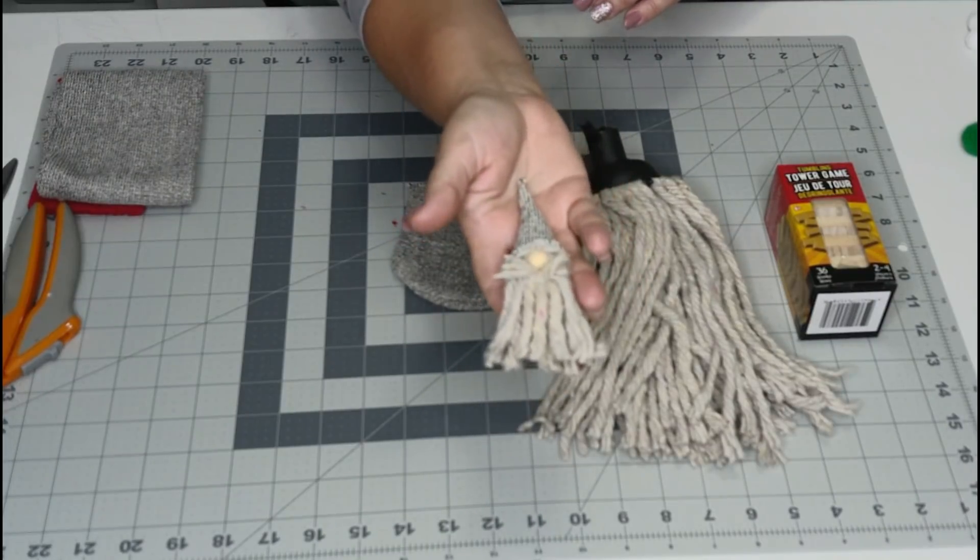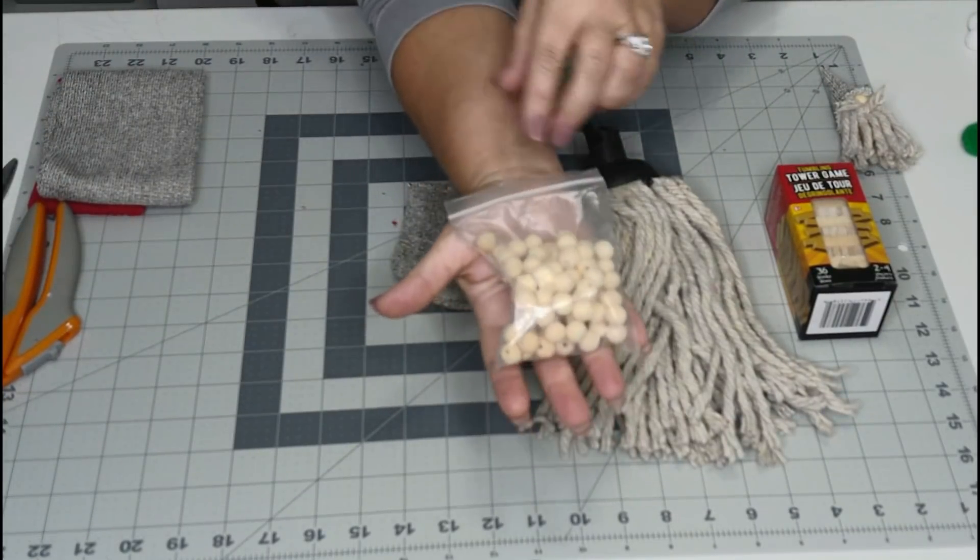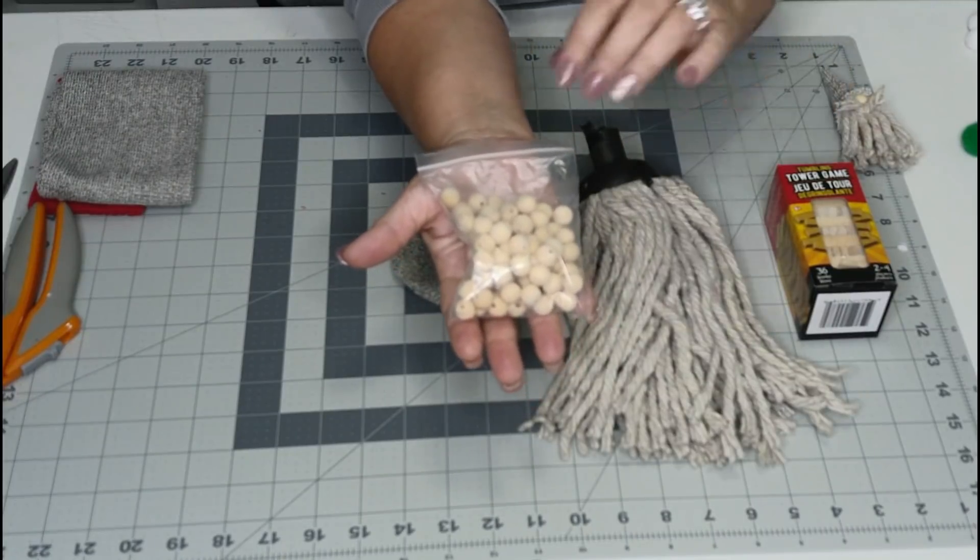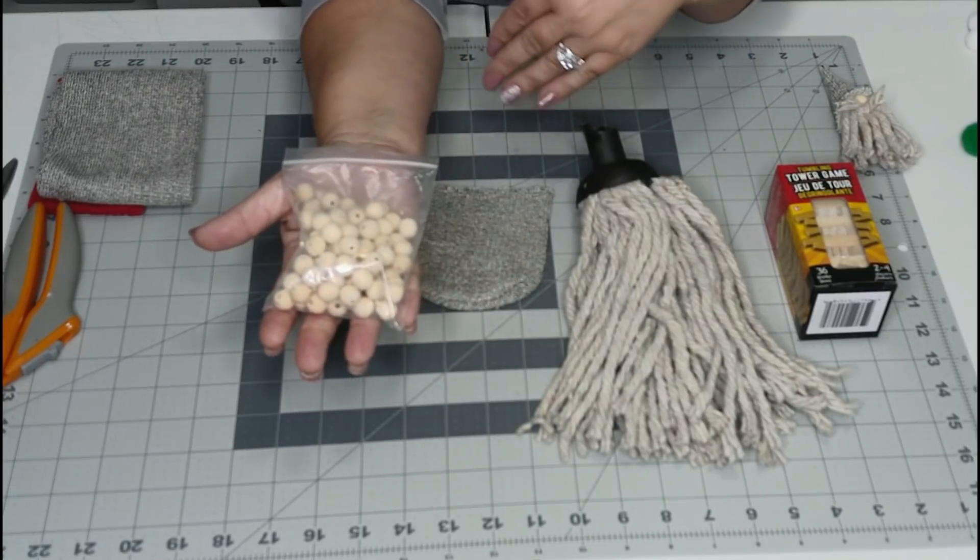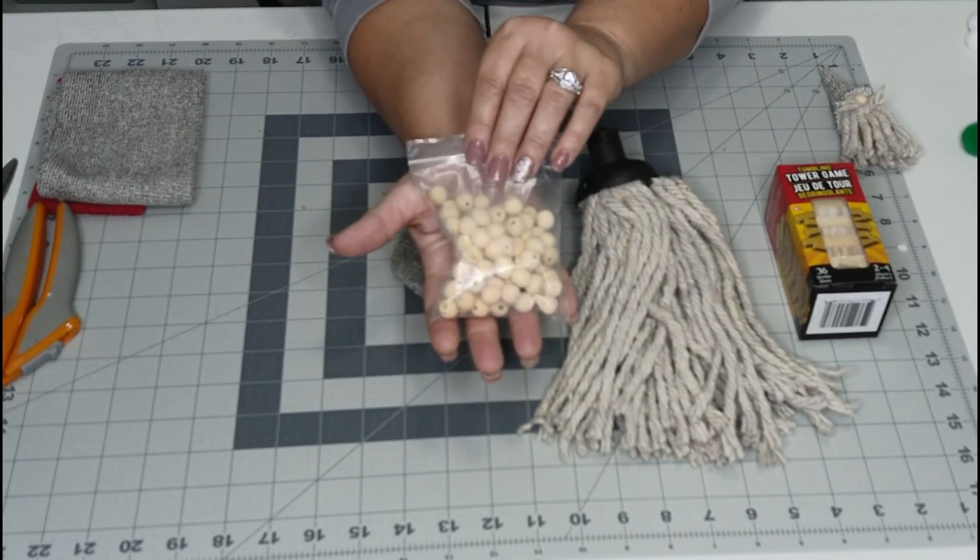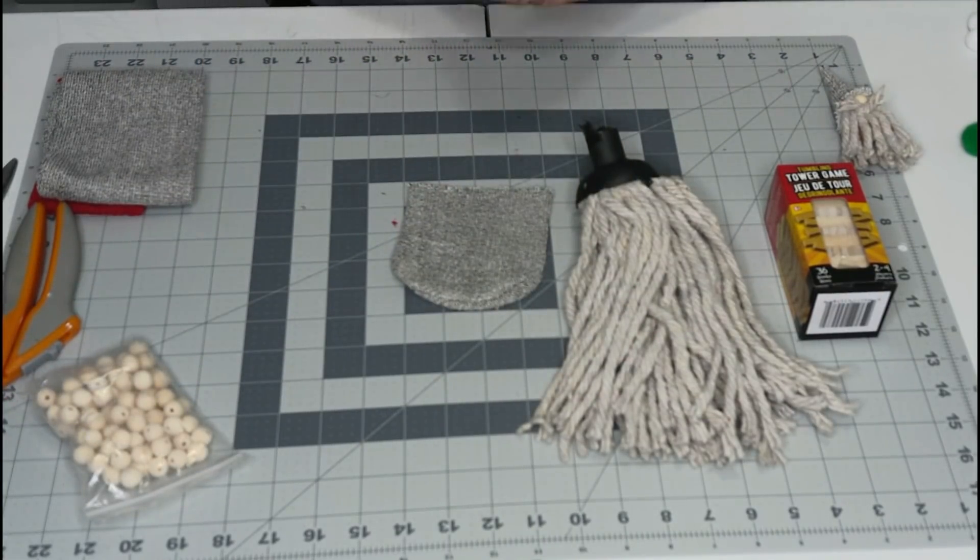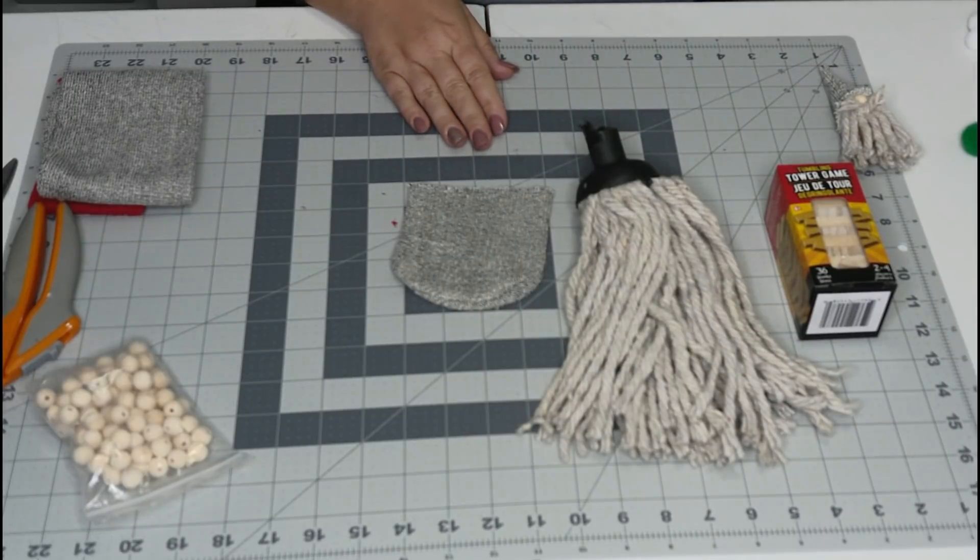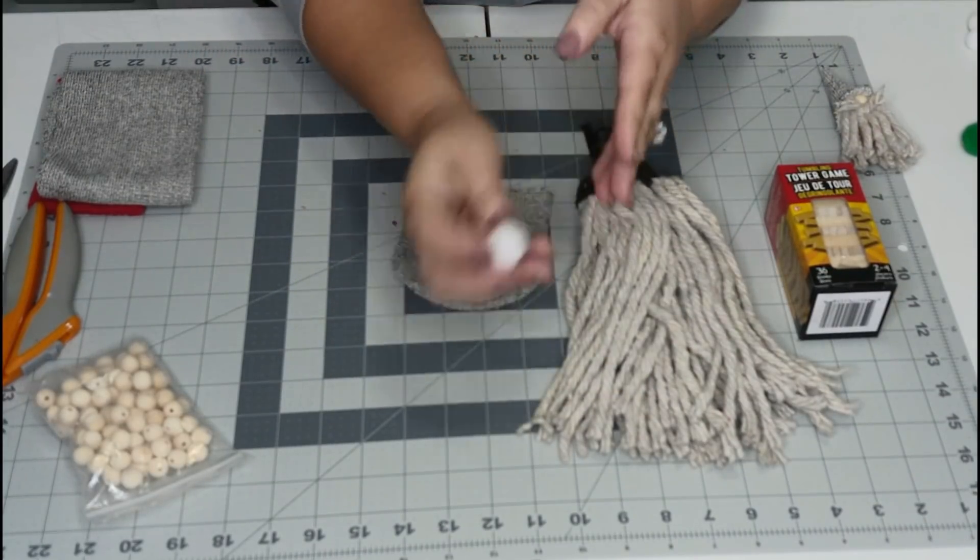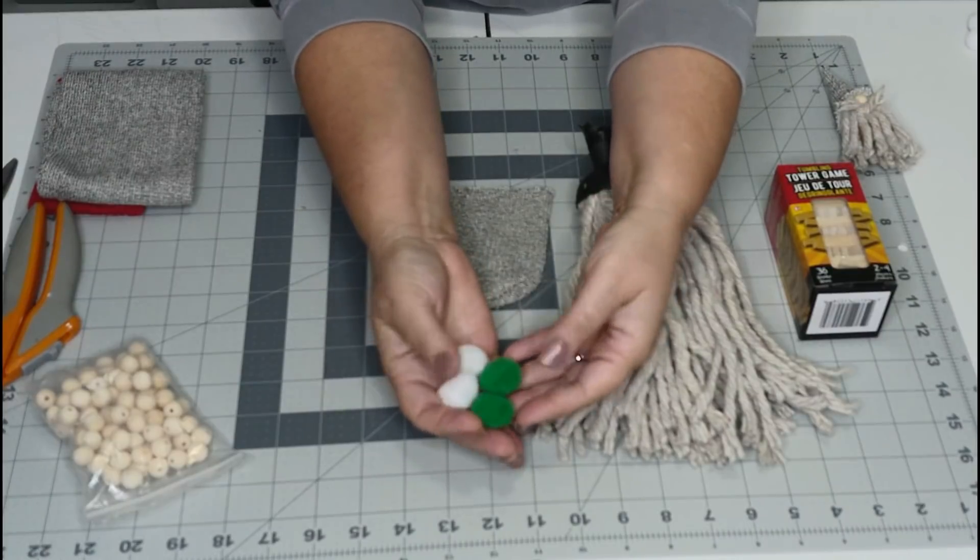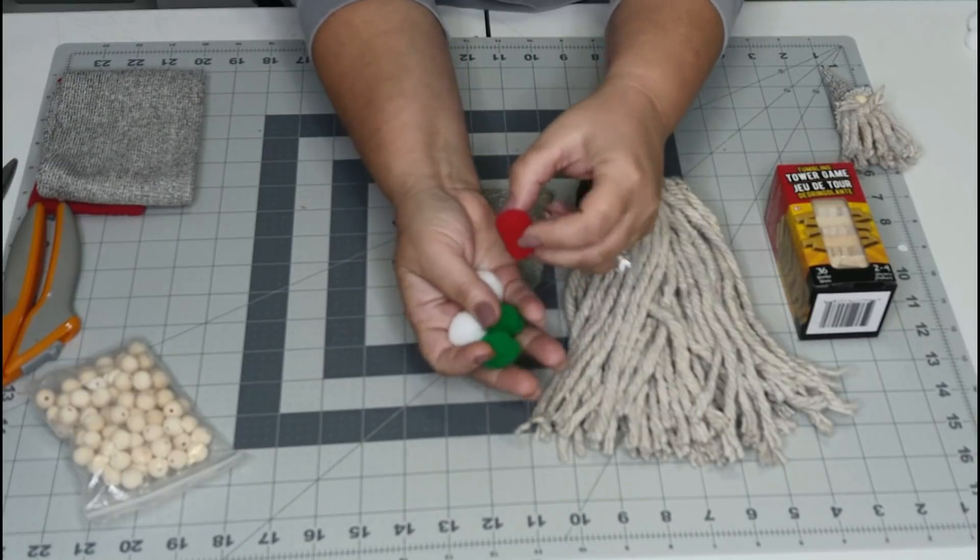Y'all, this is what our cute little mini gnome is going to look like, we're going to string him up on a garland. We're going to need some wooden beads that I picked up from Amazon, I'll put that link down below. We're also going to need our jute twine and a package of the little pom-poms from Dollar Tree. These come in red and green and white, a whole package for a dollar.